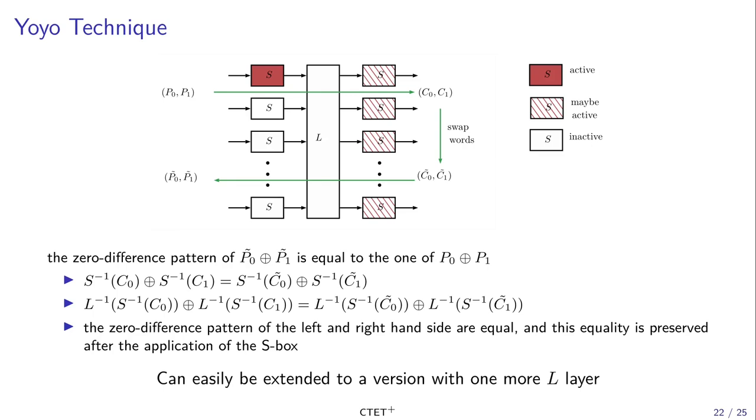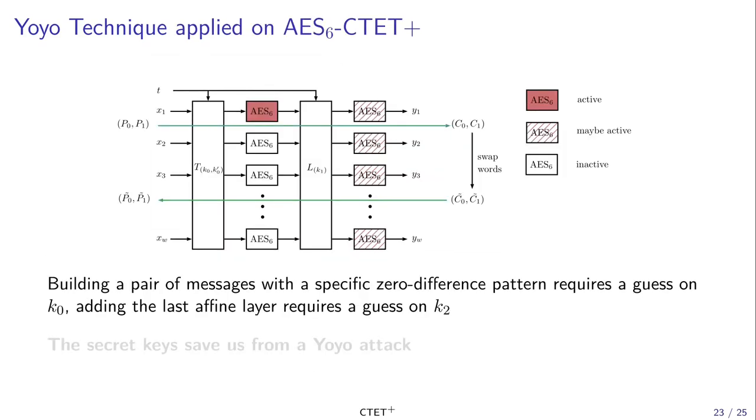Let us see what happens when we try to apply this technique to our construction. First, we have to build a pair of messages with a specific zero difference at the input of the first AES box. As we have seen earlier, this requires a guess on the key to the first linear layer. And besides, when we want to swap some ciphertext word, this also requires a guess on the key to the final linear layer. All in all, the fact that the two outer linear layers use secret keys actually saves us from yo-yo attacks.